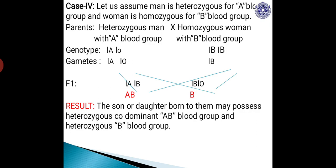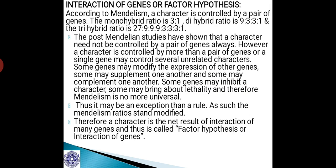In this class I have explained only one such example of blood group inheritance in man. The rest you will have to solve because we have to learn the concept better. I will give you the details of such problems later. Now moving on to interaction of genes or factor hypothesis.